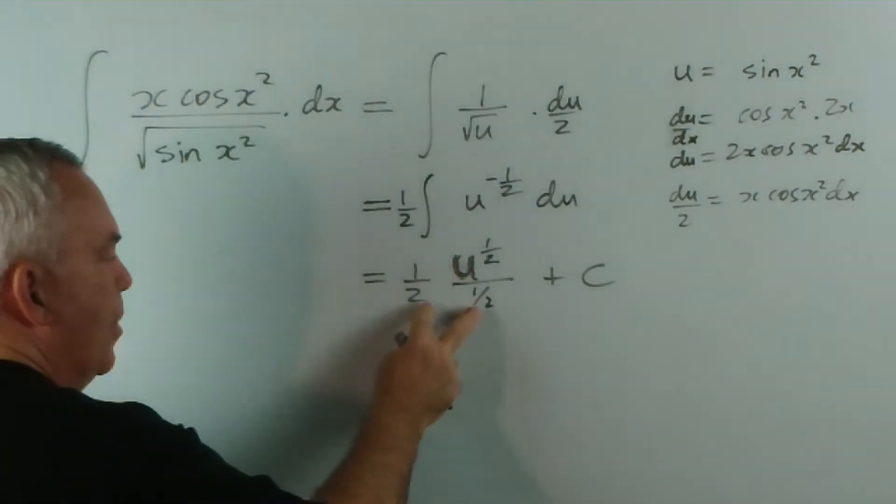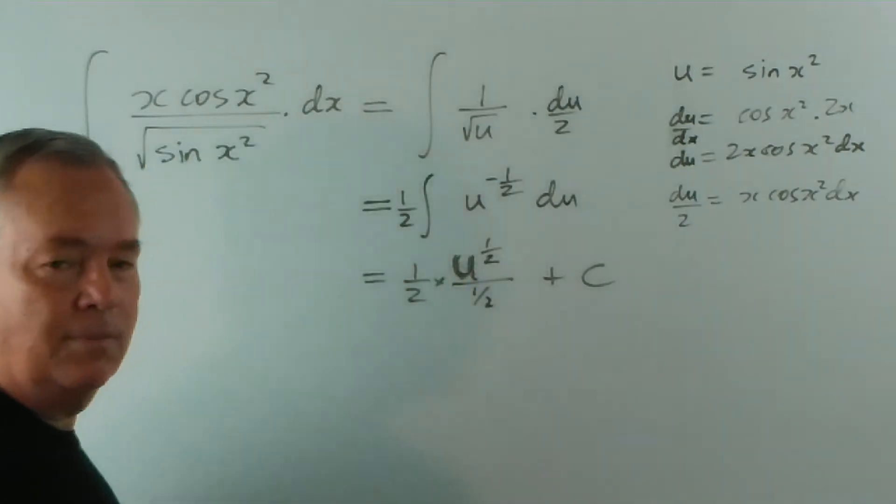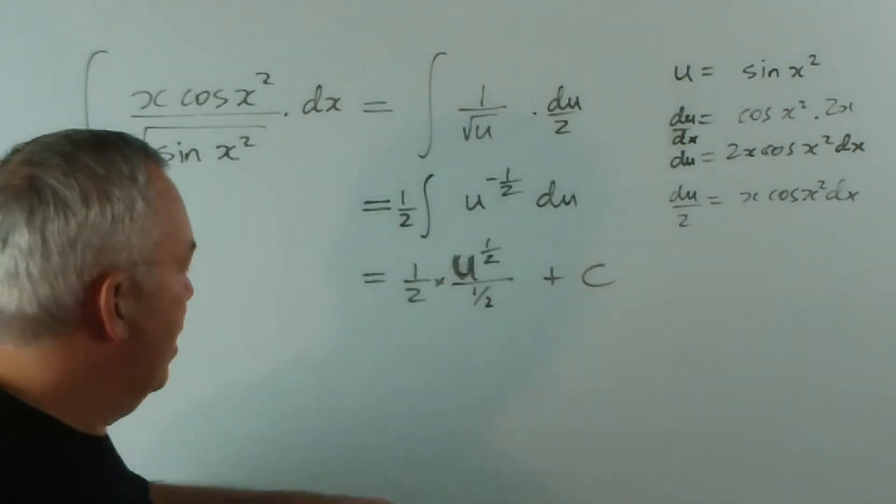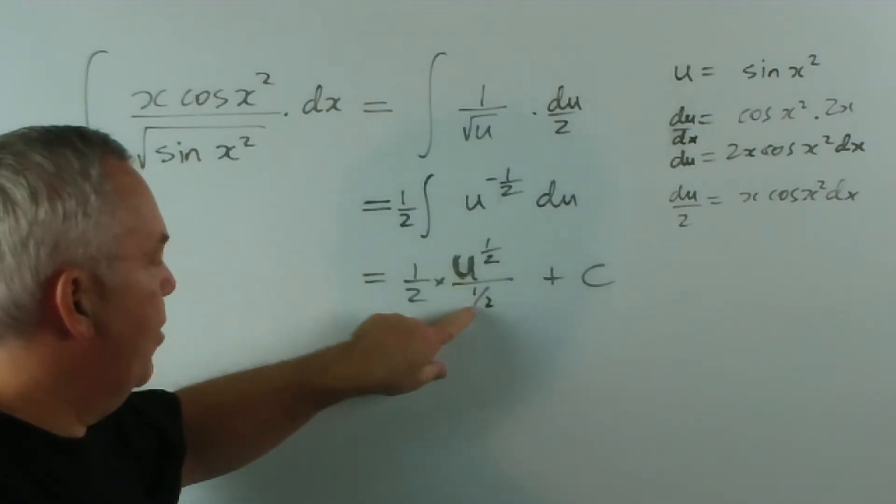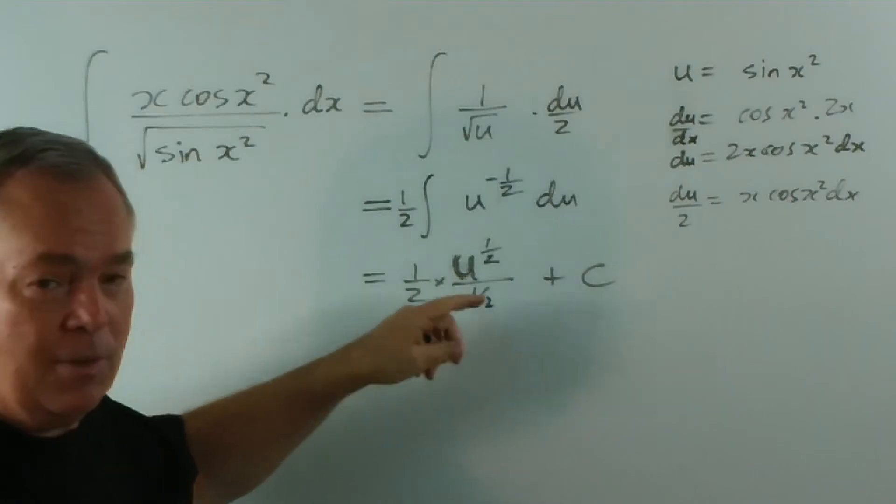Now there are a couple of ways of thinking about this. Here we have a half times this, so we've got a half times that, and we're dividing by a half as well. So a half divided by a half is 1.